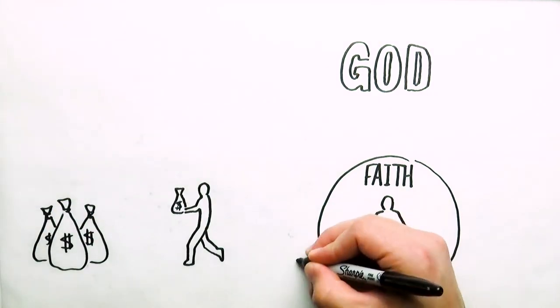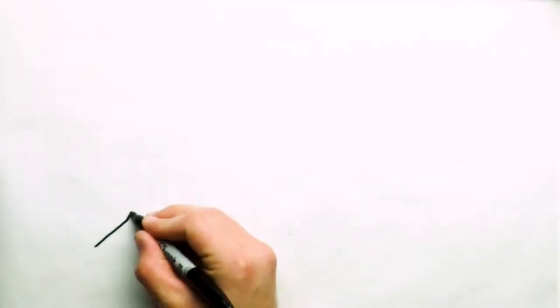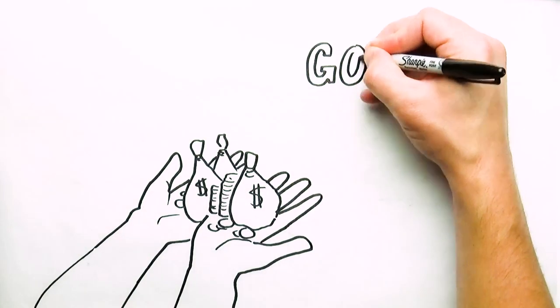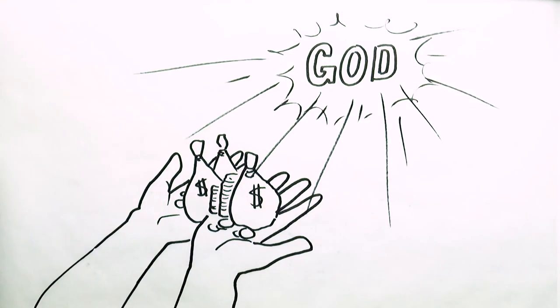Whenever we prioritize our own possessions over God and what he values, we detach ourselves from the incredible things he wanted to do through us. But if we surrender our earthly possessions to God and become willing stewards of what he wants done with those possessions, he's able to manifest his glorious reality through them.